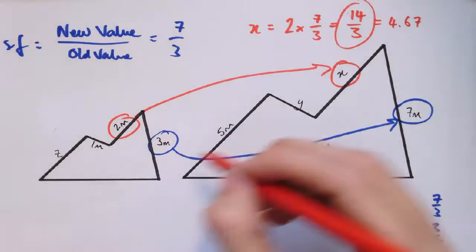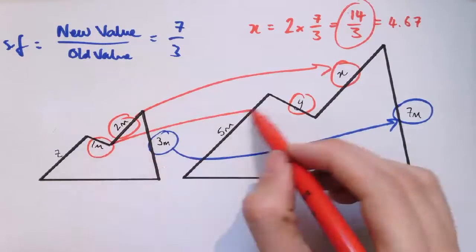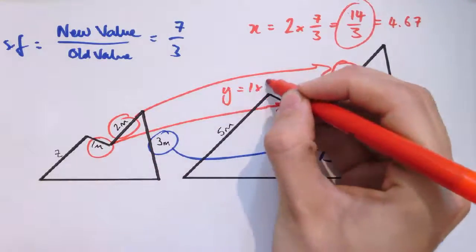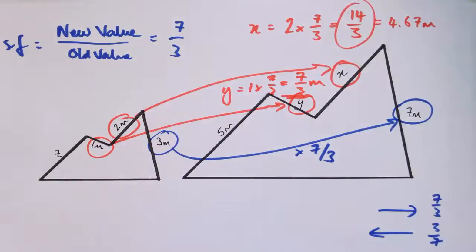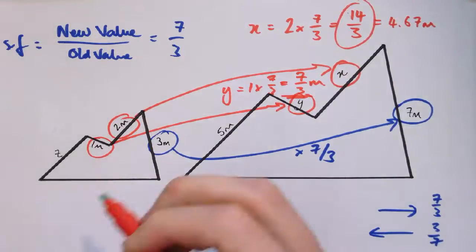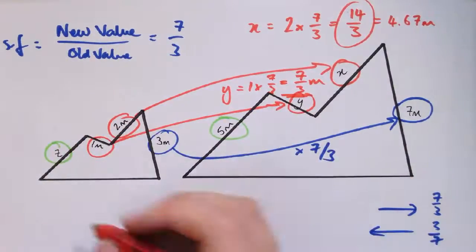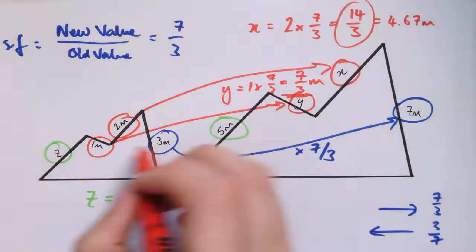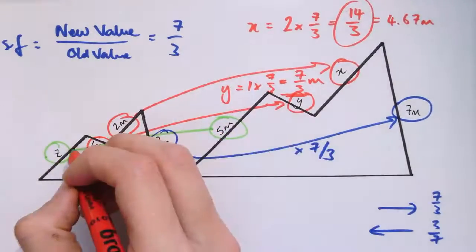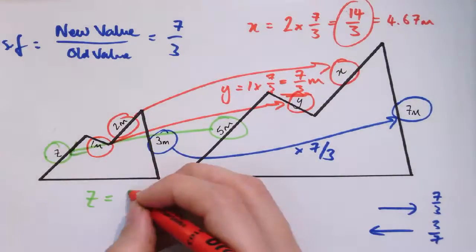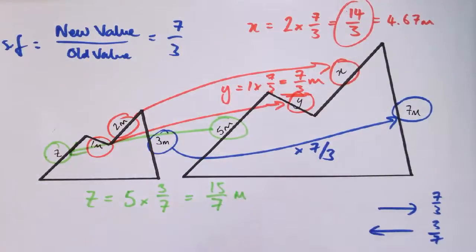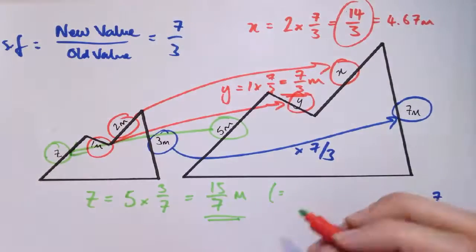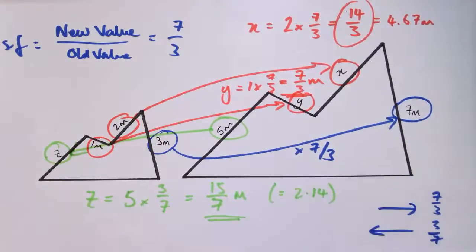So y, again, well, y just corresponds to 1 metre over here. So that's easier. That's y is just 1 times 7 over 3. So y is 7 over 3 metres. And for z, we're going back in the opposite direction this time. z corresponds to 5. So either divide by that scale factor of 7 thirds, or just multiply by the equivalent scale factor in the opposite direction of 3 sevenths. So z is 5 times 3 sevenths, which is 15 over 7 metres, which is 2 and a bit metres. If you really wanted to, you could write that as 2.14 metres. That's rounded off a little bit, because 7ths aren't exact.